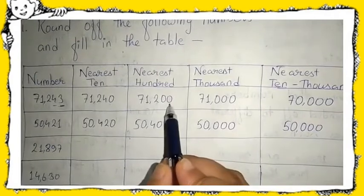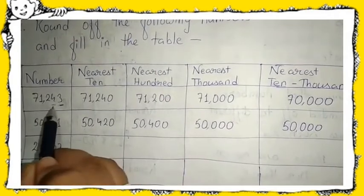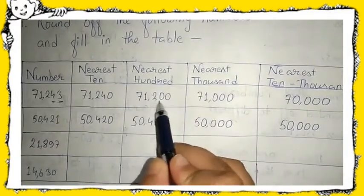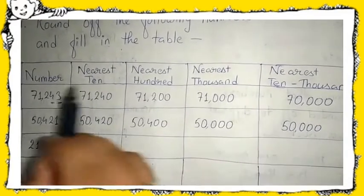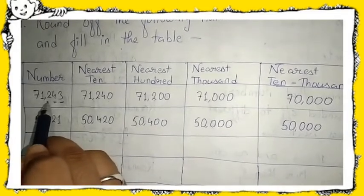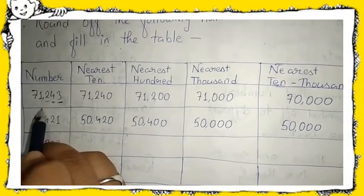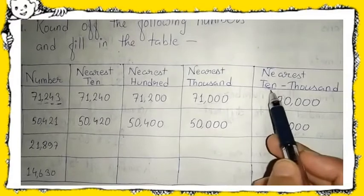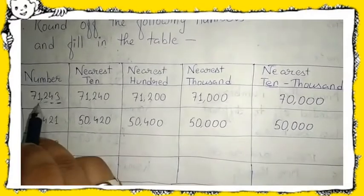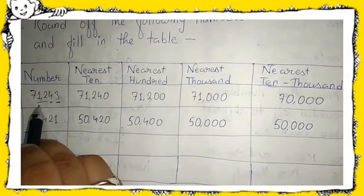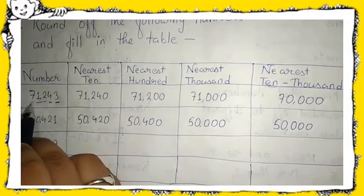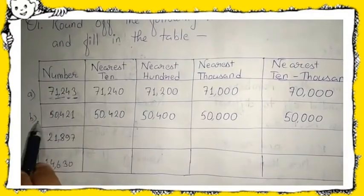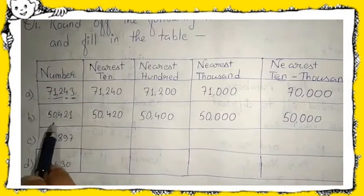For nearest hundred, look at the tens place — it is four, which is less than five, so it will be seventy-one thousand two hundred. For nearest thousand, look at the hundreds place — it is again less than five, so the thousands place remains the same: seventy-one thousand. For nearest ten thousand, the thousands place is again less than five, so the ten thousands place remains the same, giving seventy thousand.